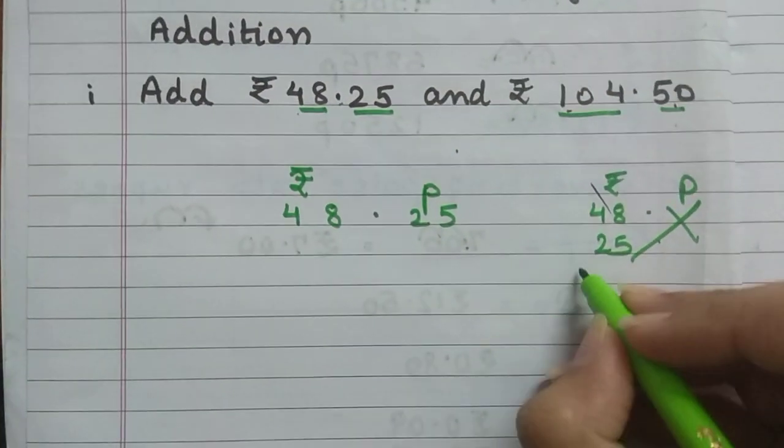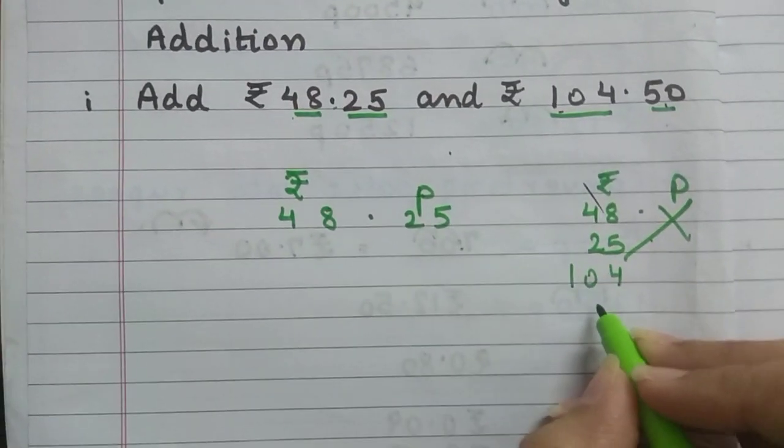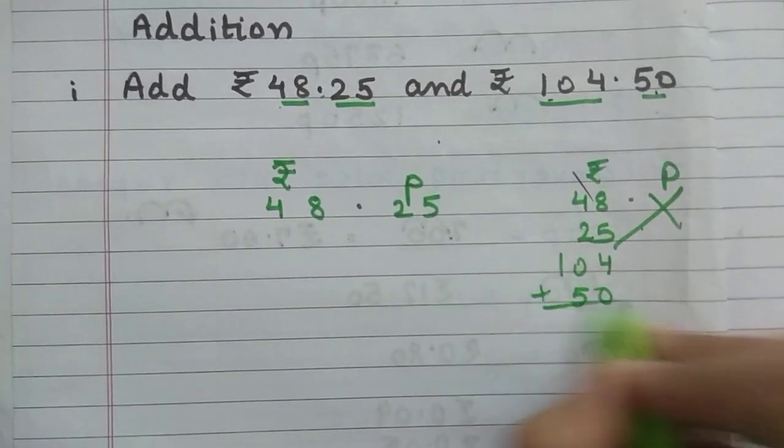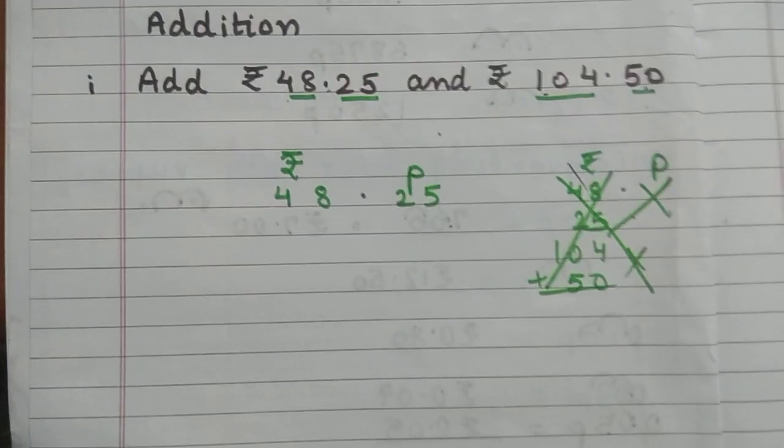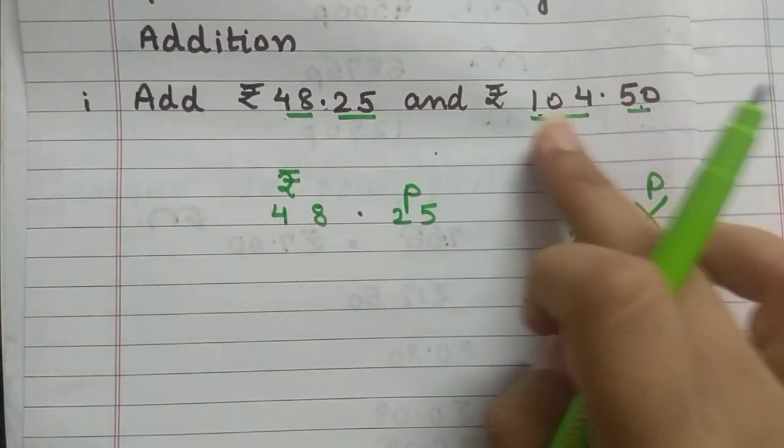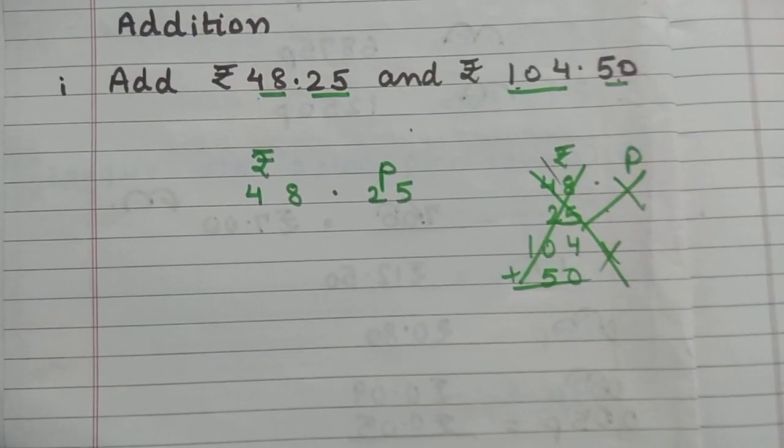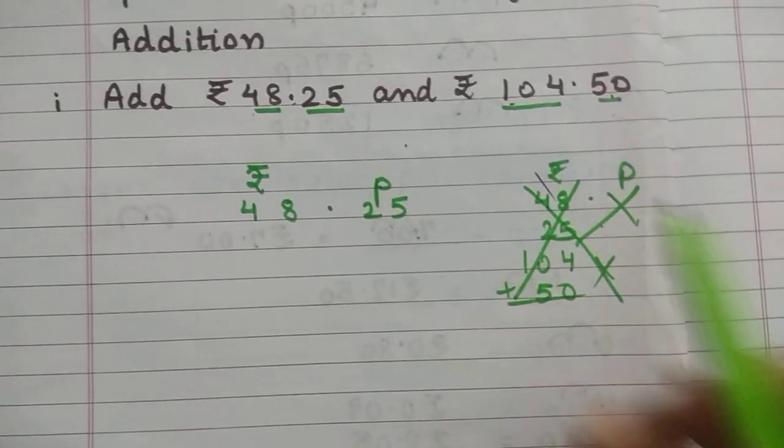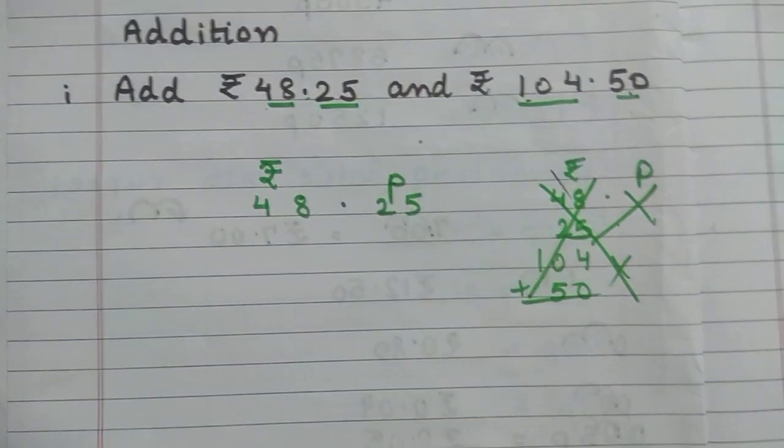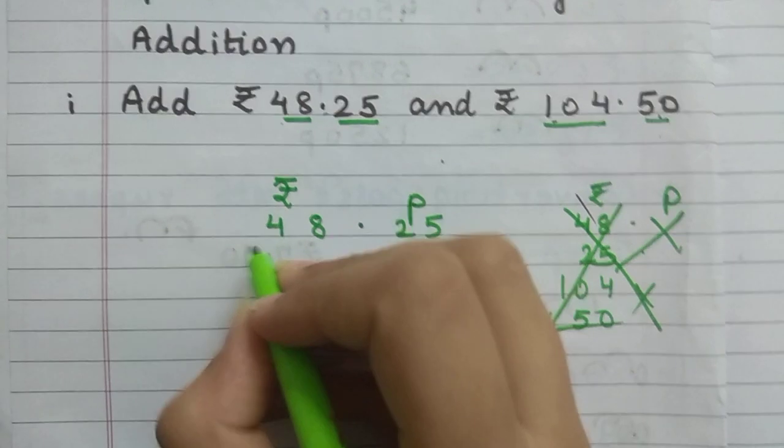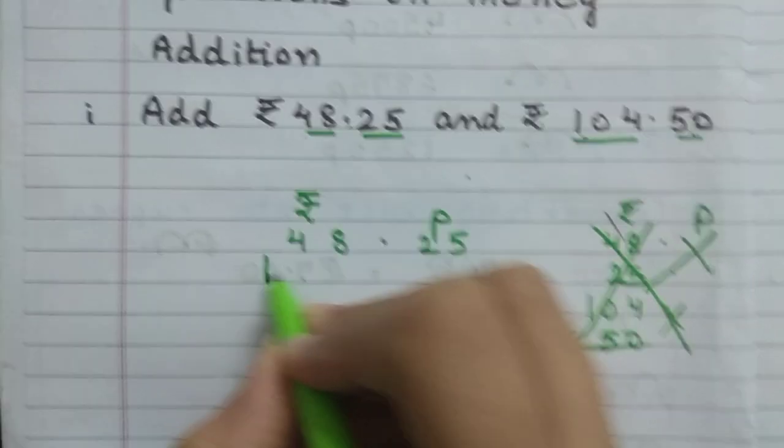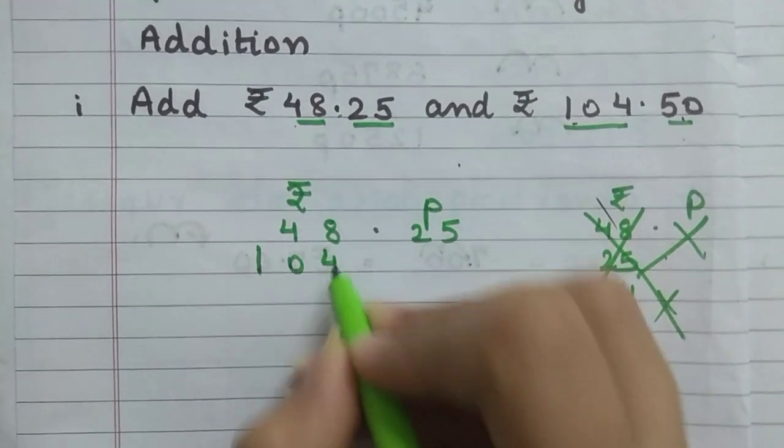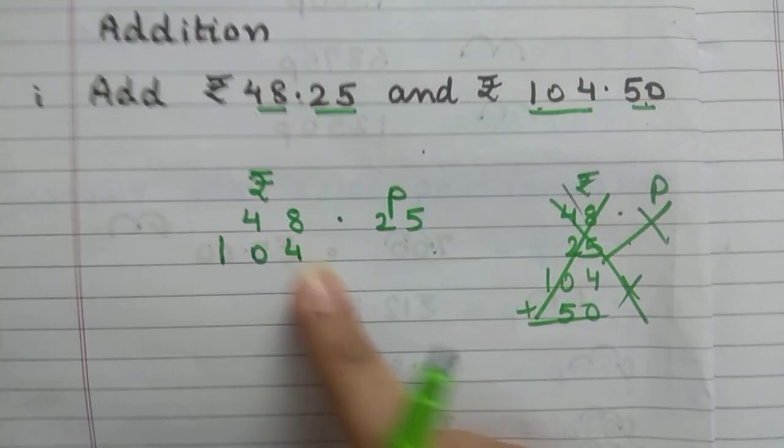And then what they do? 104 and 50. So 50 now I add. Finish. This is wrong. Don't practice this. The whole amount will be in one line. So 104 rupees and 50 paisa. So 104 will be like this if I have to write.